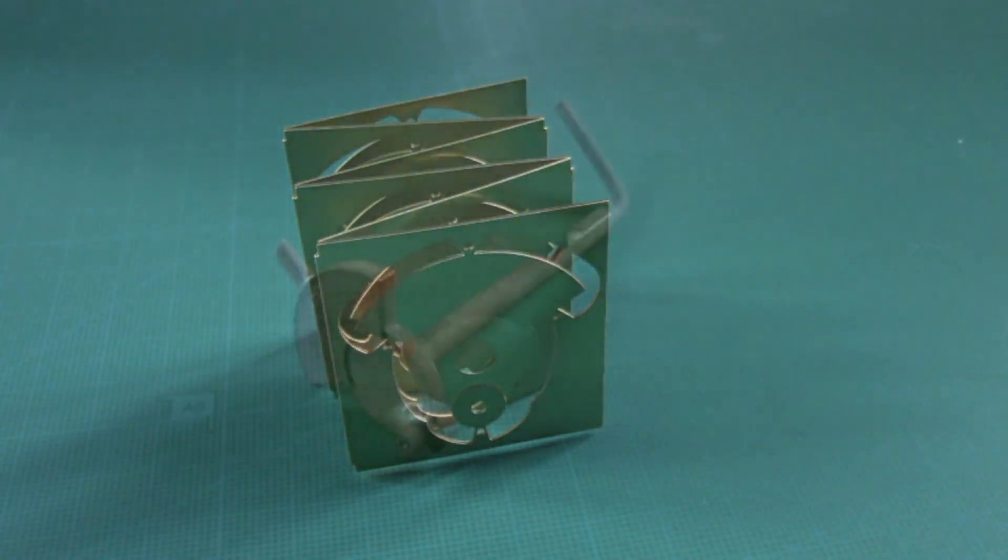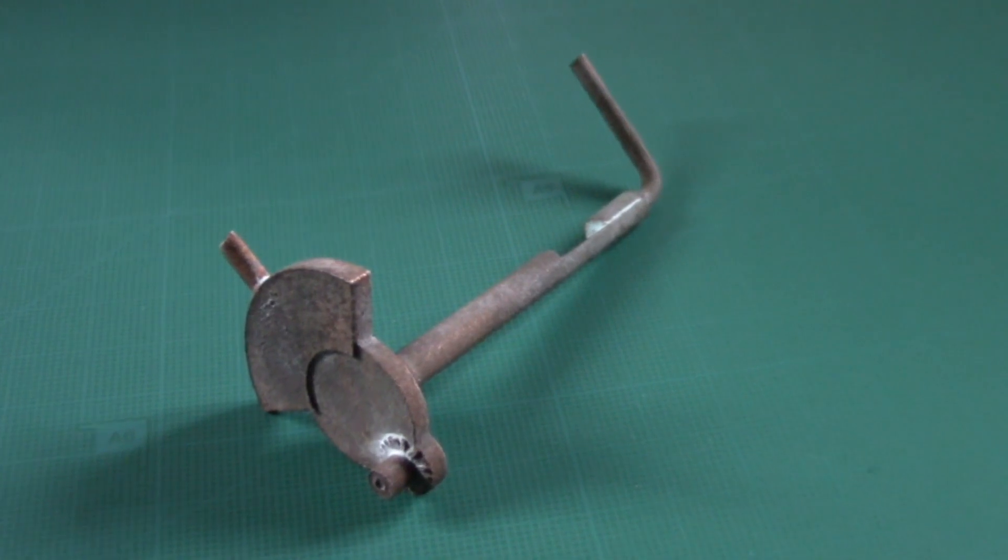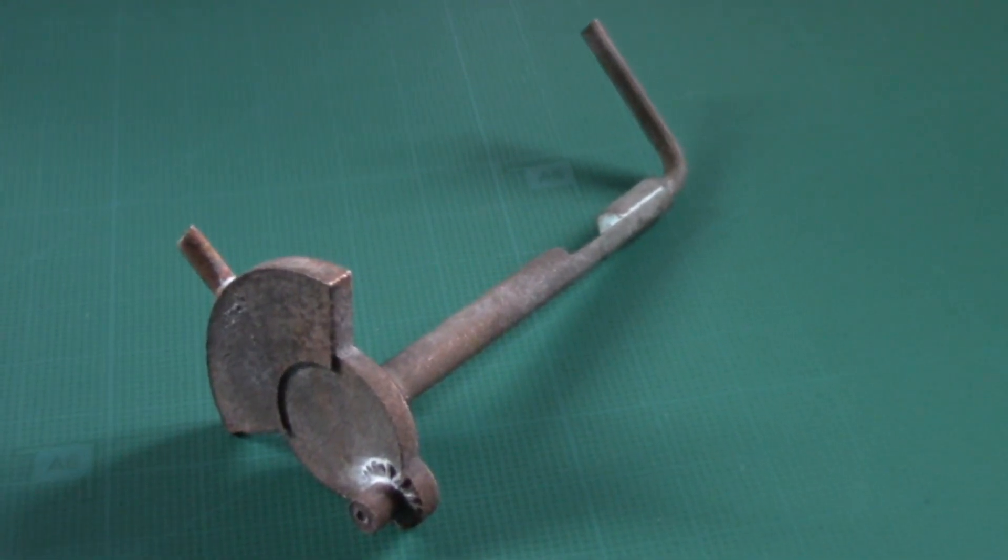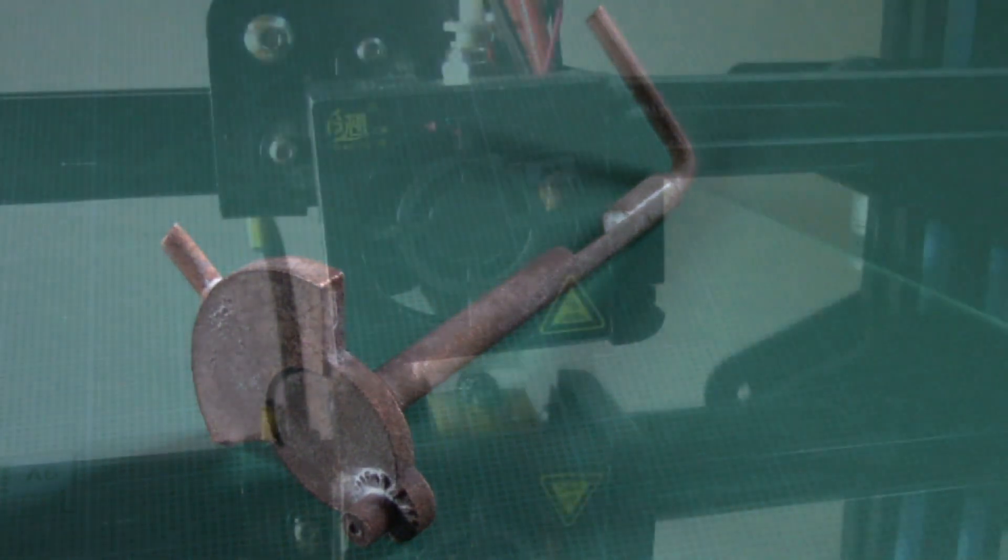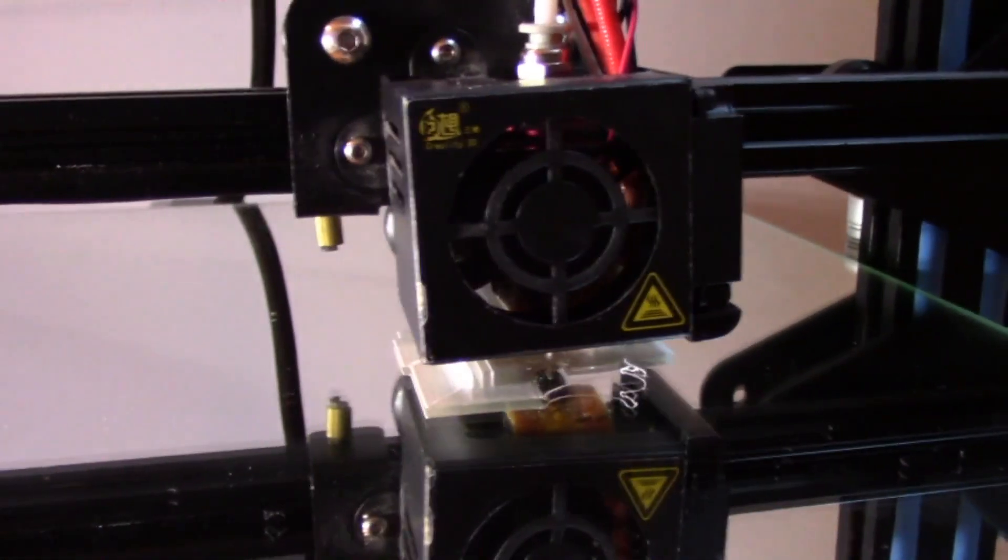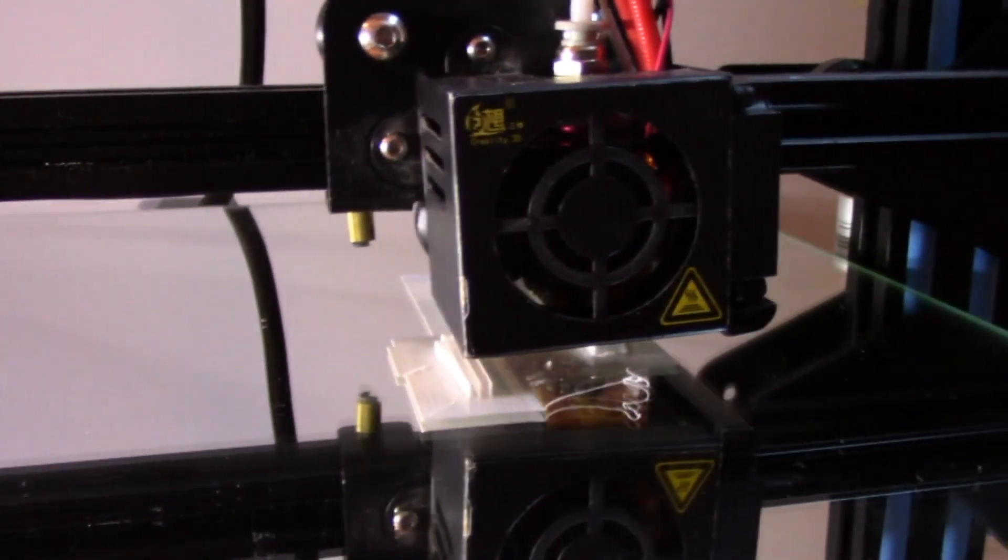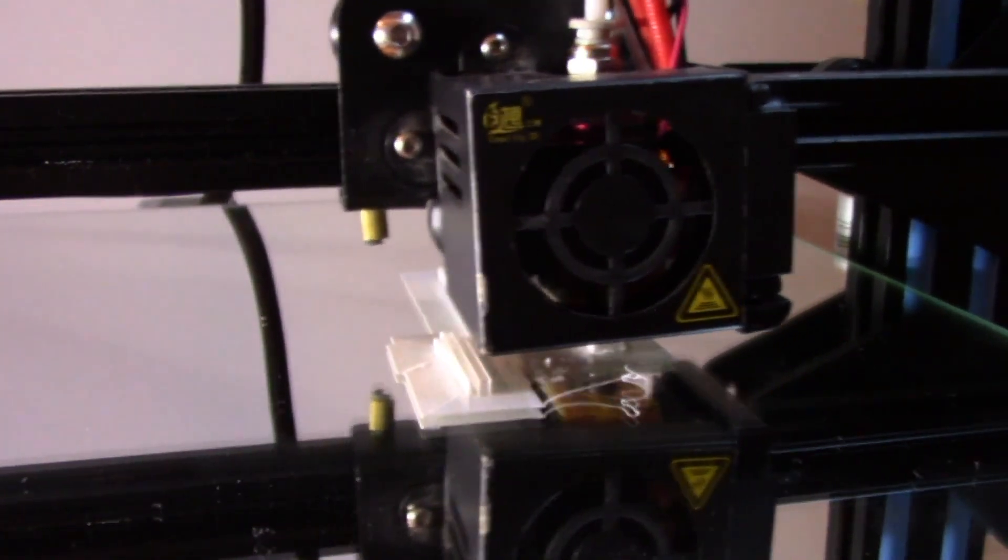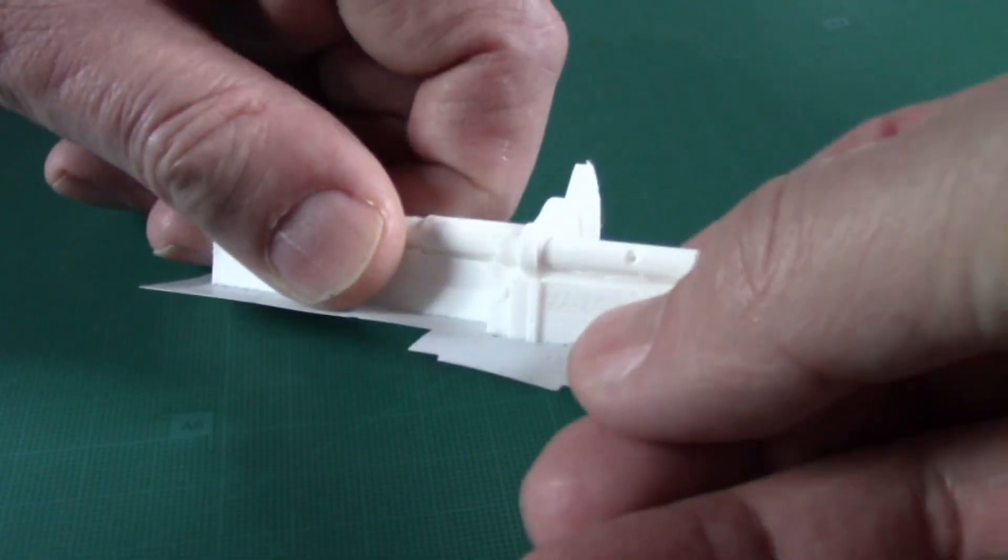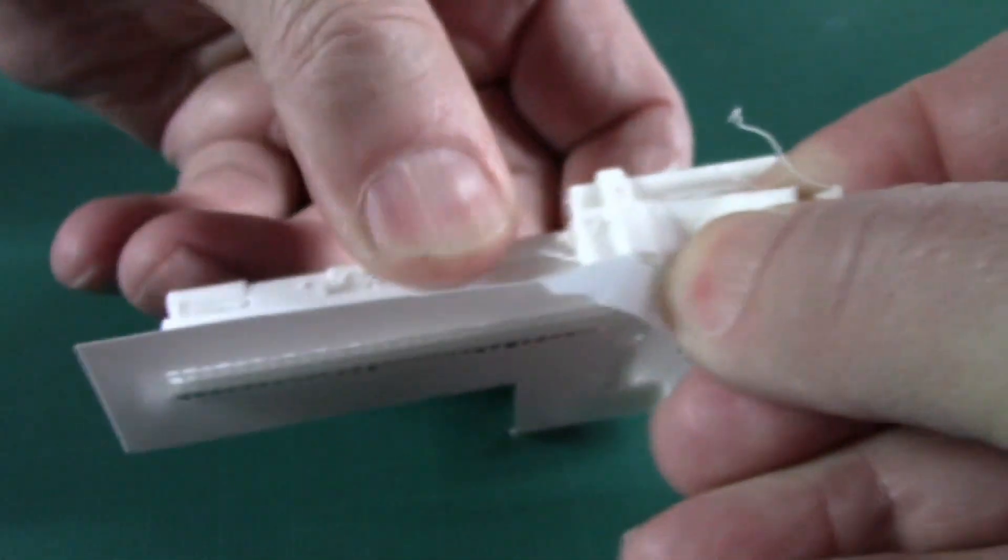The first parts printed with a powder printer at Shapeways were perfect, but ultimately too expensive. Then I tried to print them with a typical home 3D printer, a CR10S. Unfortunately support geometries were necessary here. Also the layer structure emerged quite badly. As a result, they had to be reworked elaborately.